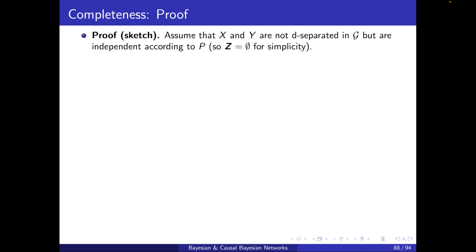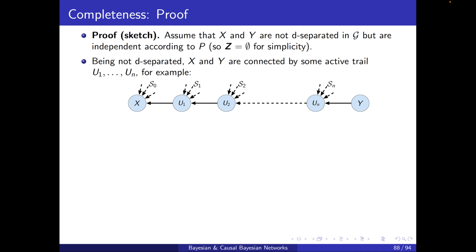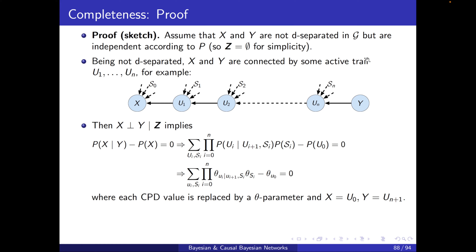Let's do the sketch of the proof. Assume that X and Y are not D-separated in G, but are independent according to distribution P that factorizes according to G. For simplicity, I'm assuming Z is empty. The fact that X and Y are not D-separated means they are connected by some active trail U1 to Un. I'm denoting the parents of Ui in addition to Ui+1 by the set Si. The fact that X and Y are independent according to P implies that P(X | Y) equals P(X).